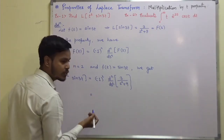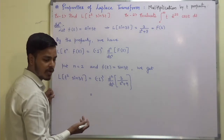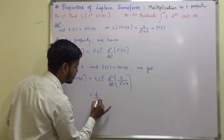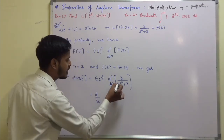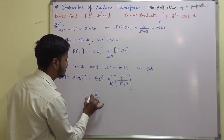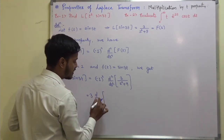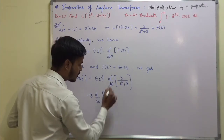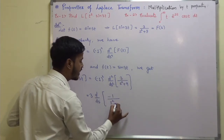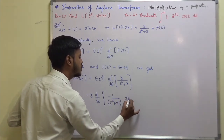Now, minus 1 squared is plus 1. Taking d/ds once, I take the 3 outside. The first derivative gives: d/ds of 3/(s²+9) equals 3 times minus 1 upon (s²+9) whole squared into 2s. So after the first derivative we have minus 6s upon (s²+9) squared.